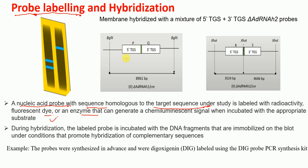For the Delta adRNAs1 Cre knockout, we synthesize a probe with sequences homologous to the 5' targeting sequence and 3' targeting sequence. For Delta adRNAs2, we have a probe with sequences homologous to the 5' TGS and 3' targeting sequence of the Delta adRNAs2 knockout. After synthesizing the probe, we label it — in our case using digoxigenin with a DIG probe PCR synthesis kit.